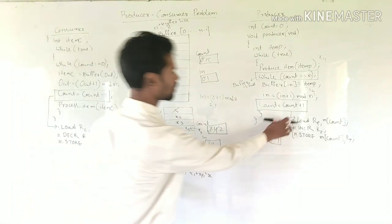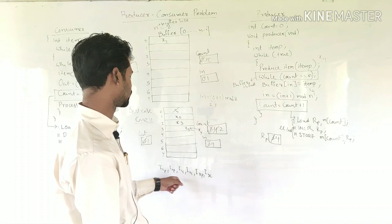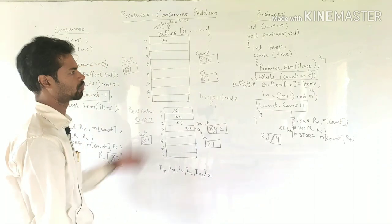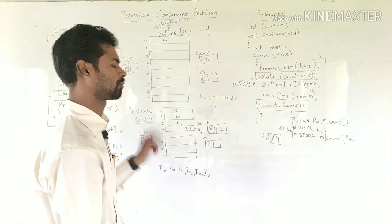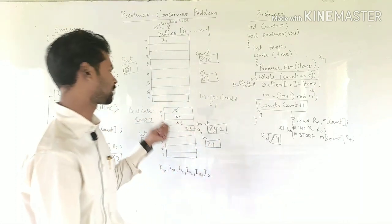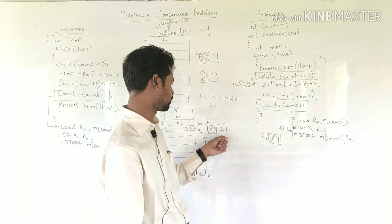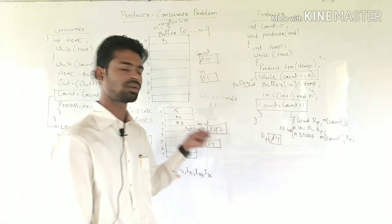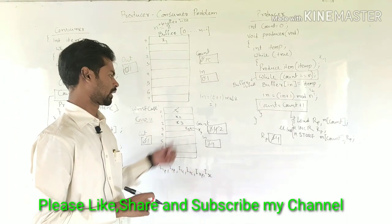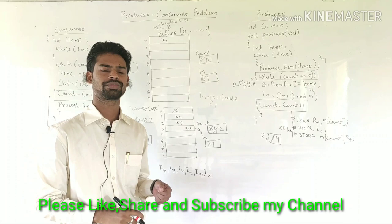The sequence executed was: I1P, I2P, I1C, I2C, I3P, then I3C. Both processes are completed. After both processes complete, the count variable should show the exact number of items present in the buffer. However, in this worst case, the count value is 2 — which is incorrect. This is the problem: we are not getting the exact item count present inside the buffer. This is all about the producer-consumer problem. Thank you.